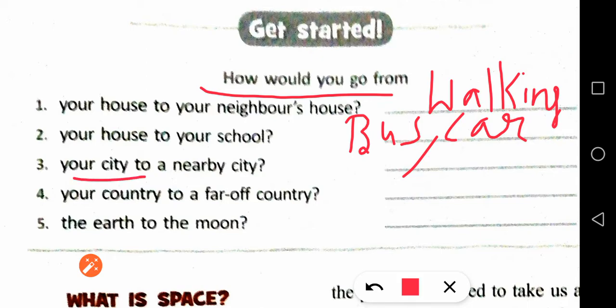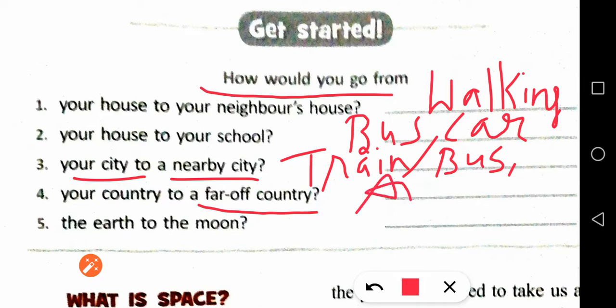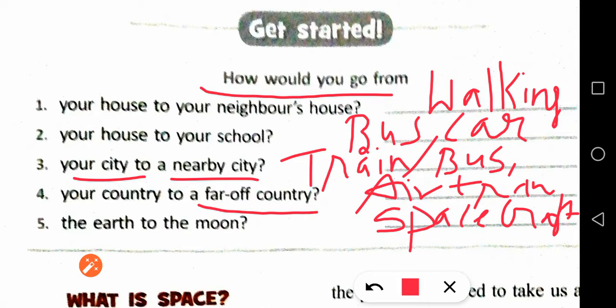To get to school, you can take a school bus, a car, or a bicycle. From your city to a nearby city, you can take a bus or train. To go from your country to a far country, you take an airplane. And from the Earth to the moon, you take a spacecraft.